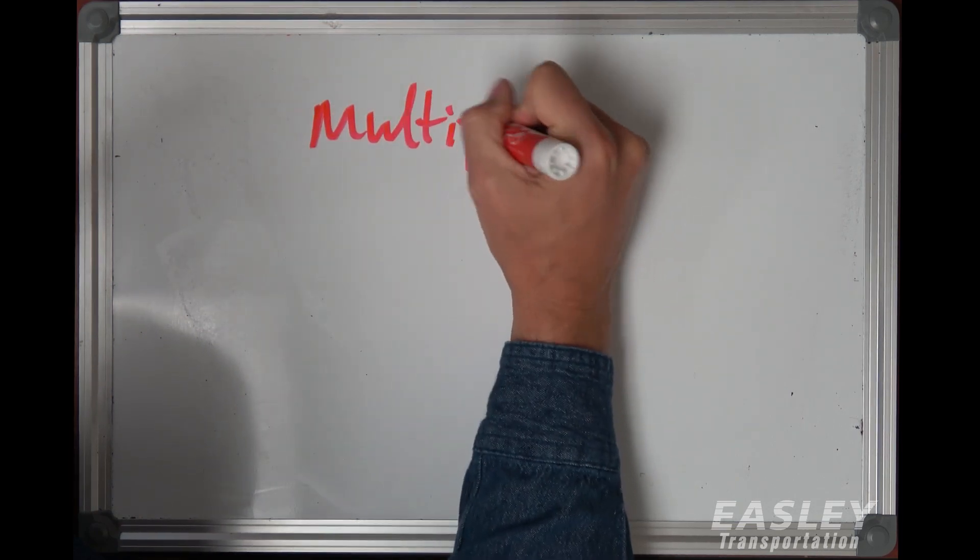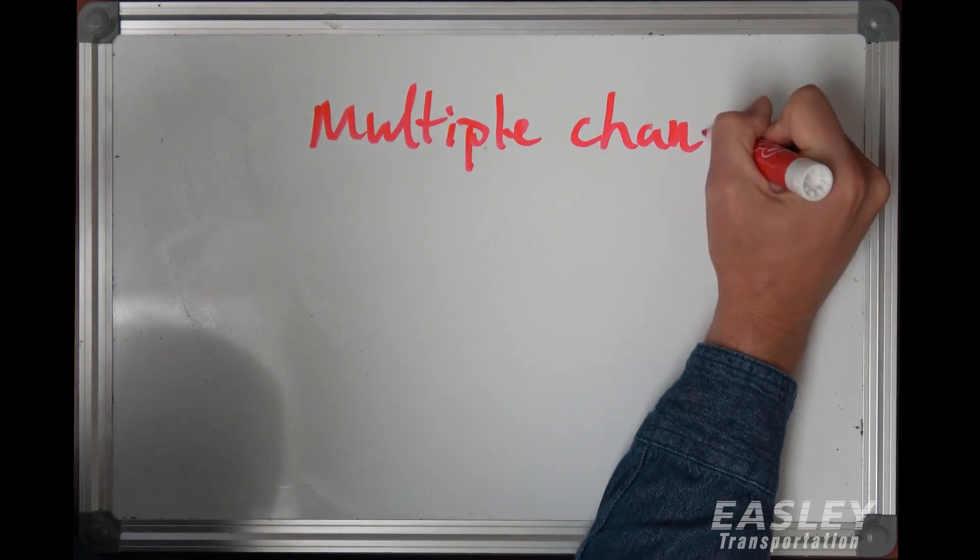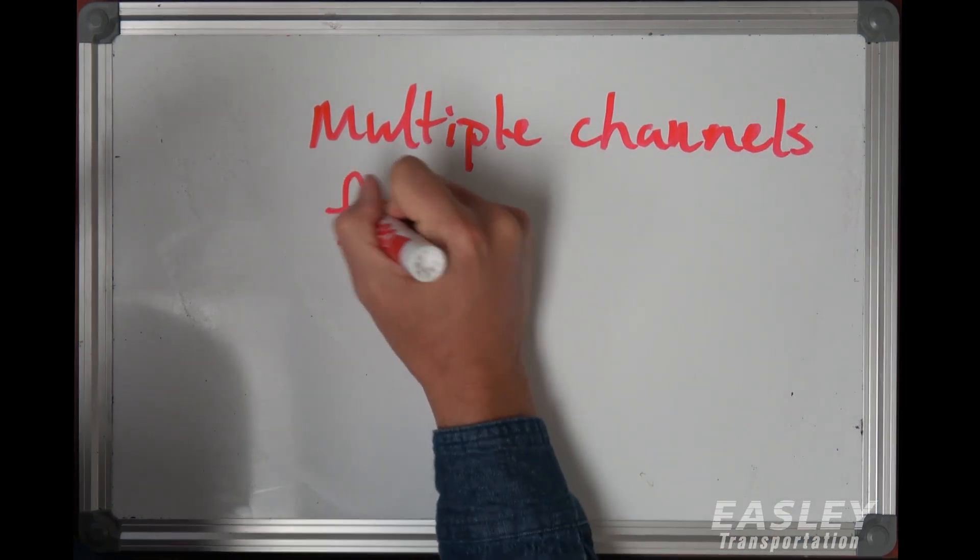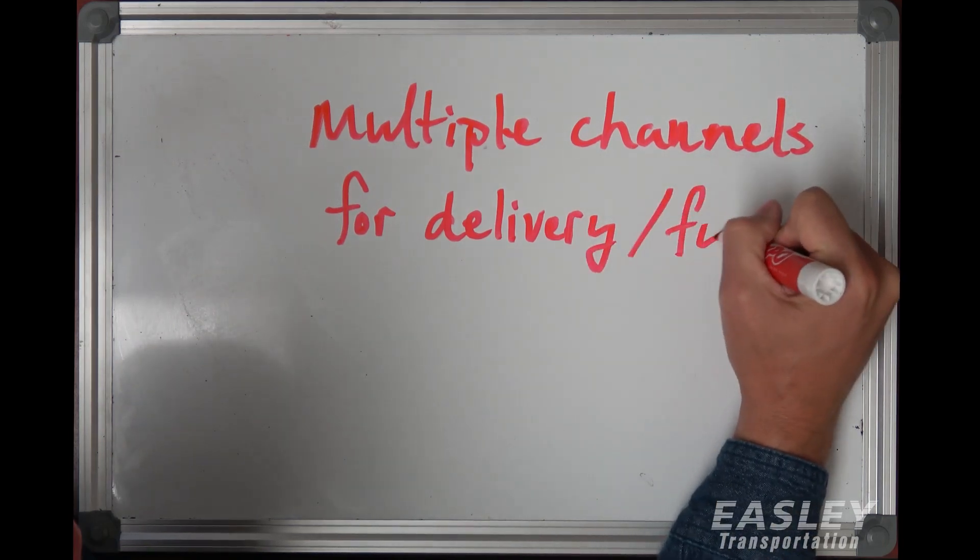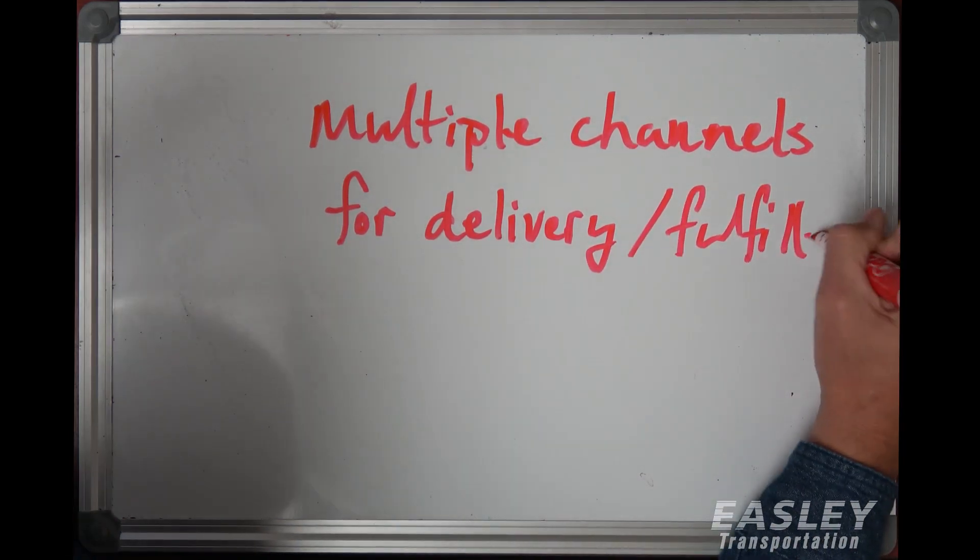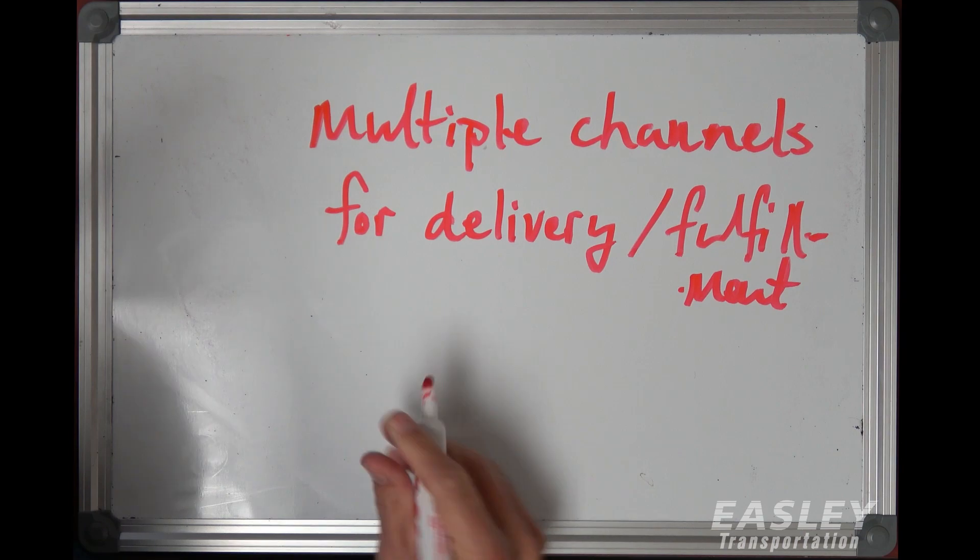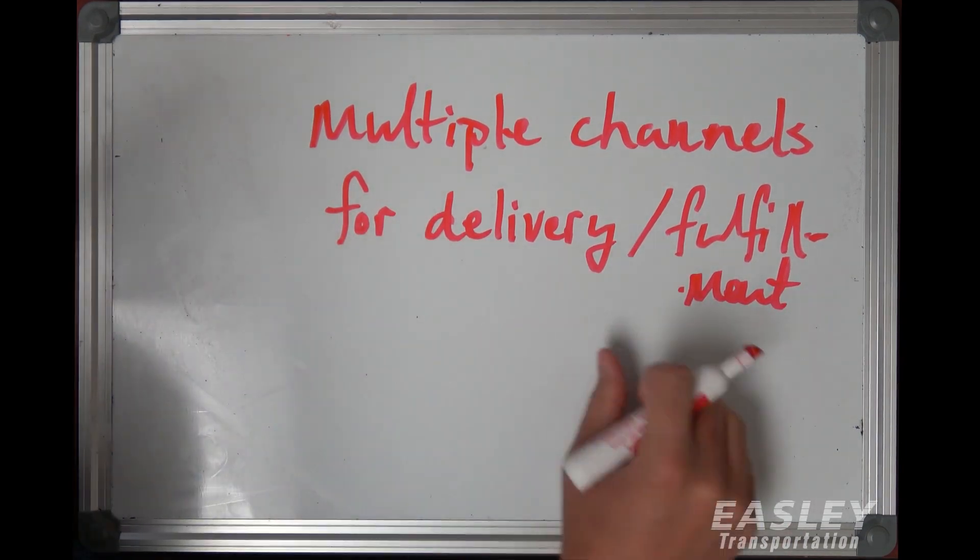If you break it down very simply, omni-channel is the idea that you have multiple channels. You've got multiple channels for your delivery or fulfillment of your freight. At the very simplest, that's what omni-channel is.